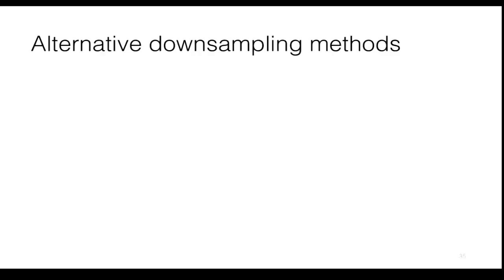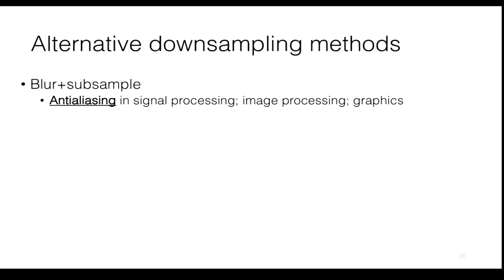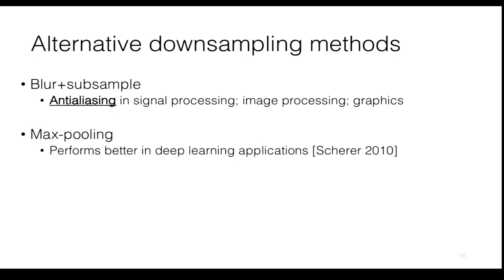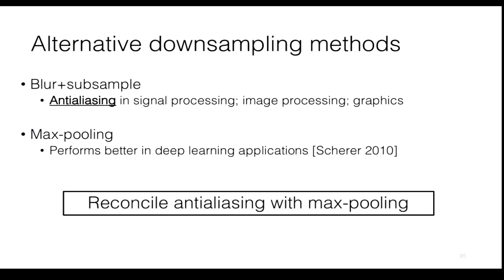If you come from a signal processing or image processing background, you might be confused, because we were taught in sophomore-level signal processing the proper way to downsample a signal: you're supposed to blur the signal first as a means of anti-aliasing. But through very systematic evaluations in the deep learning community about 10 years ago, it was found that max pooling empirically performs better than traditional anti-aliased downsampling. So that's ultimately what was adopted.